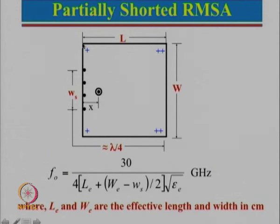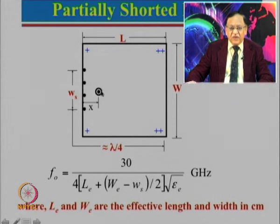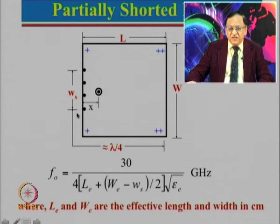The possibilities are: either we short the entire width, in which case this length will be equal to lambda by 4. However, we can also do partial shorting of the width. Instead of connecting the full width via plated-through holes, we can just have a smaller number of plated-through holes near the center. Then the field is 0 here, going to plus, then double plus. This length will be approximately equal to lambda by 4, and from that we can find the resonance frequency. Here c is 3×10^10 centimeters per second, converted to GHz, where L_e and w_e are the effective length and width in centimeters.